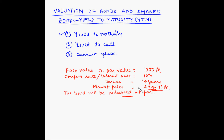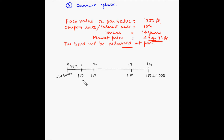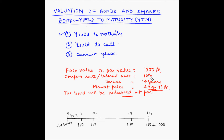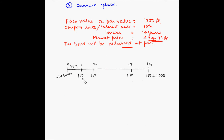The yield to maturity considers both the interest income and any capital gains or loss. Let us represent this bond on a time scale. The interest that the investor is going to get will be 10% of 1000, which is 100 rupees at the end of every year.